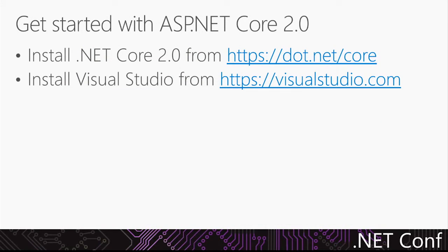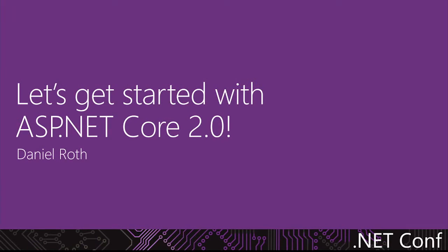To get started with ASP.NET Core 2.0, first go to dotnet.microsoft.com/core and download the .NET Core 2.0 distribution for your platform. You'll also want to go to visualstudio.com and download Visual Studio for your platform of choice — Visual Studio for Windows, Visual Studio for Mac which supports ASP.NET Core 2.0, or if you prefer a lightweight text editor, Visual Studio Code.